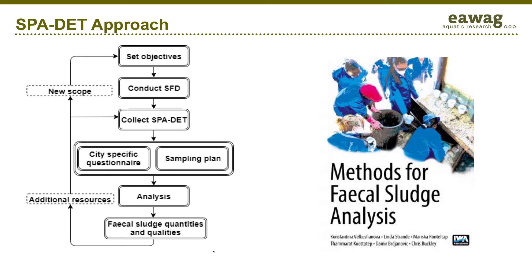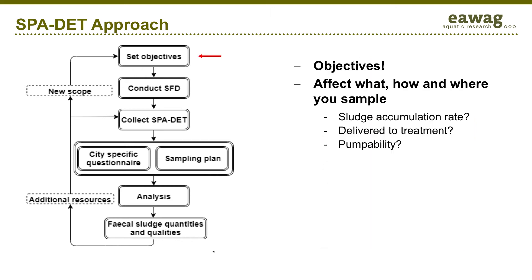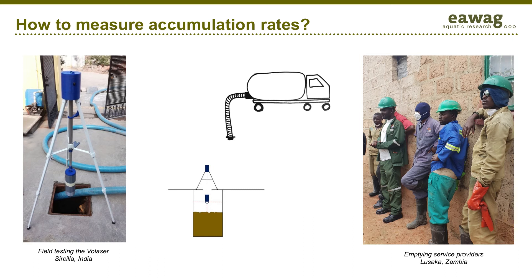This is the method that we have developed. It is a chapter in the book Methods of Fecal Sludge Analysis. The first step is to set your objectives, as this will influence what, how, and where you will take your samples. For example, are you concerned about accumulation rates within a pit latrine, or with what is arriving at treatment plants, or do you just want to know whether sludge is pumpable by a vacuum truck? Two approaches to measuring rates of accumulation are in situ with the full laser device we are developing to measure volumes of fecal sludge, or working together with manual or mechanical service providers during emptying operations to measure quantities and qualities during discharge at treatment plants.